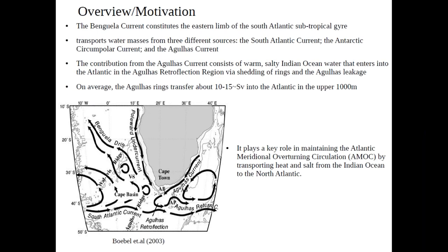This schematic figure from Wable et al. 2013 depicts the whole dynamics and all the currents near the Cape Basin and the Benguela current. The Benguela current consists of the eastern limb of the South Atlantic subtropical gyre. It transports water masses from three different sources: the South Atlantic current, the Antarctic Circumpolar Current, and Indian Ocean inflow in the form of the Agulhas current through rings and eddies and Agulhas leakage.